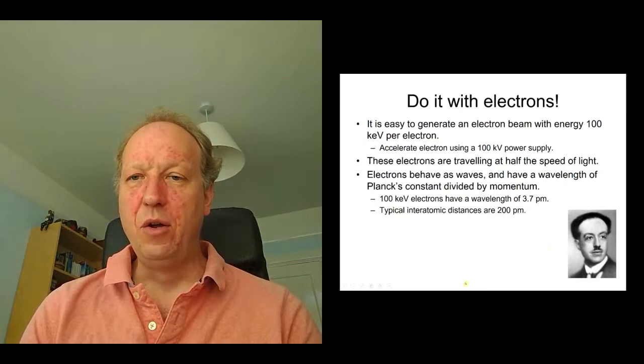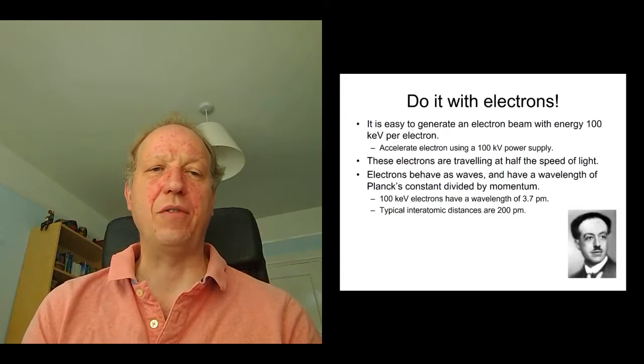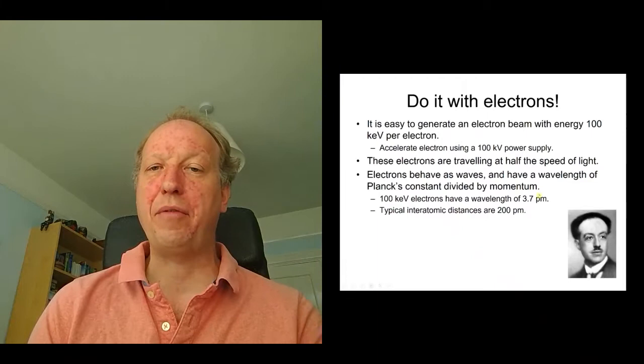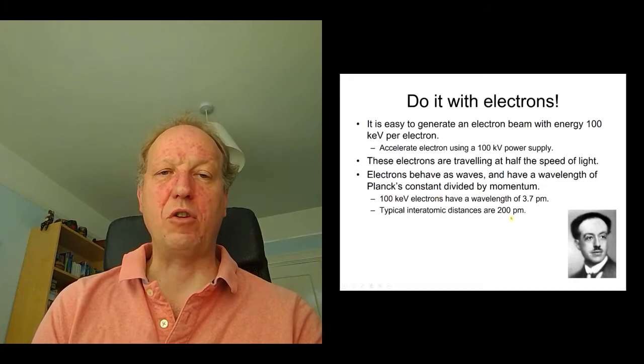And this chap down here, Louis de Broglie, realized that we could calculate the wavelength of these electrons. And he's thinking about this wave-particle duality. The wavelength of the electrons is given by Planck's constant, which is one of the fundamental constants in science, divided by the momentum of the electrons. If you put all the numbers in, you find that 100 keV electrons have a wavelength of about 3.7 picometers. A picometer is 10 to the minus 12 of a meter. Nanometer is 10 to the minus 9 of a meter.